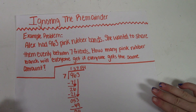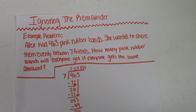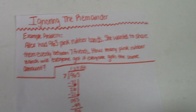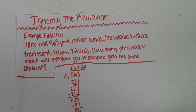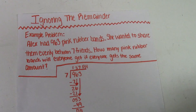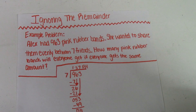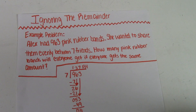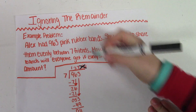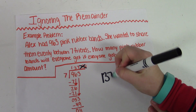Example problem: Alex had 963 rubber bands. She wanted to share them evenly between seven friends. How many rubber bands will everyone get if everyone gets the same amount? Well, you can see I've already solved the problem and I got an answer of 137 with a remainder of 4. Now let's go back and look at the clue words. It says 'if everyone gets the same amount,' so you just want to cross out the remainder and use 137 as your answer.